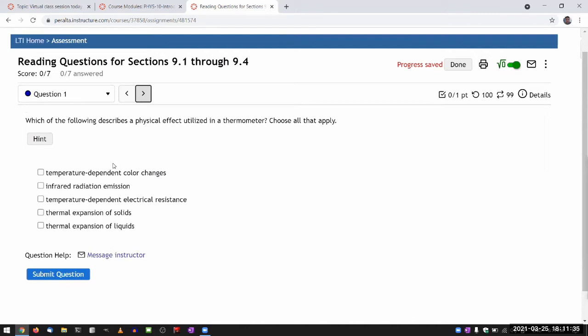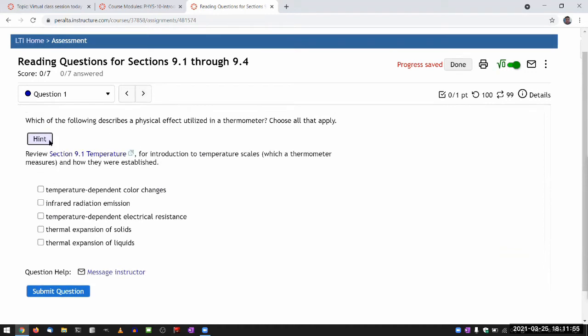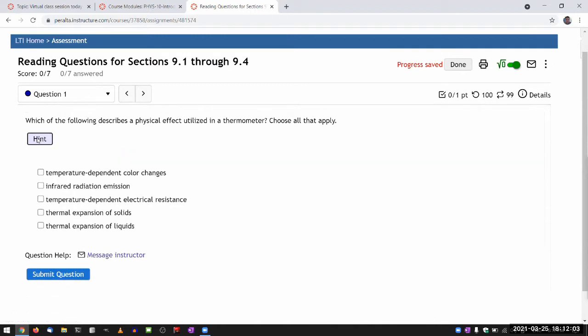All right, let's get started. So I was looking at this question before starting this session, and I want to highlight some examples of the actual effect. It says, which of the following describes a physical effect utilized in a thermometer, choose all that apply. The introduction to temperature scales section describes some of the material changes that take place.